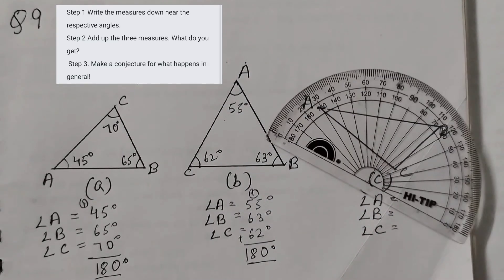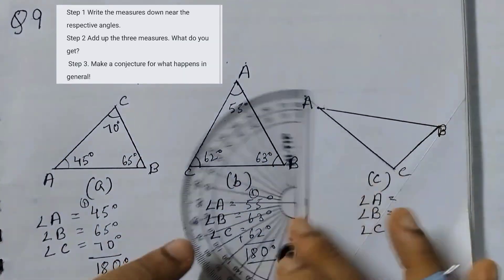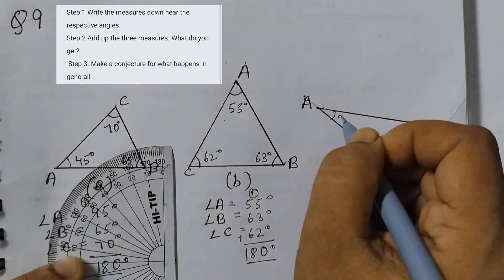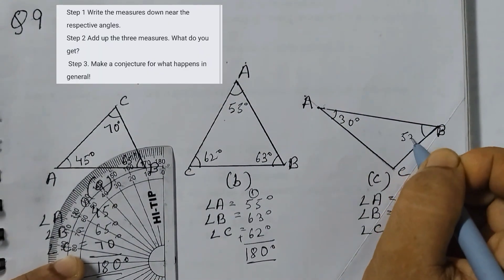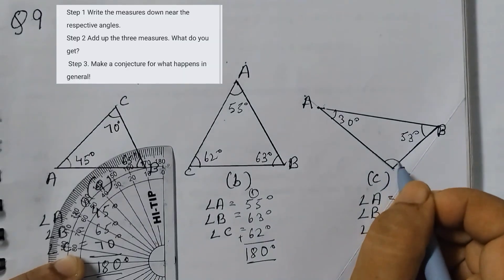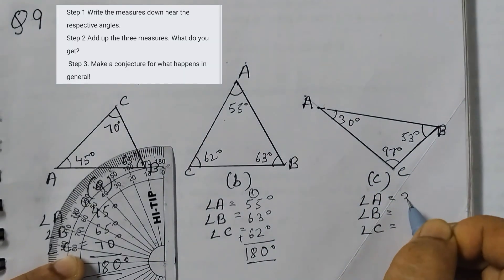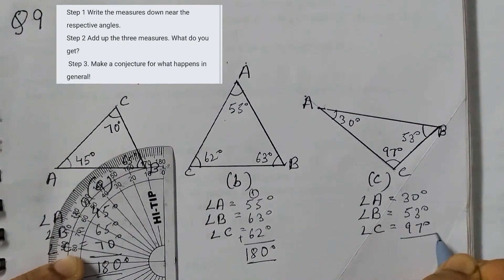Now this one when you measure, again you can measure it either this way or you can measure it this way. For each of the angles you can do like that. And the measurement is this is 30 degrees, this is 53 degrees, and this is 97 degrees. Angle A 30 degrees, 53 degrees, and C is 97 degrees.